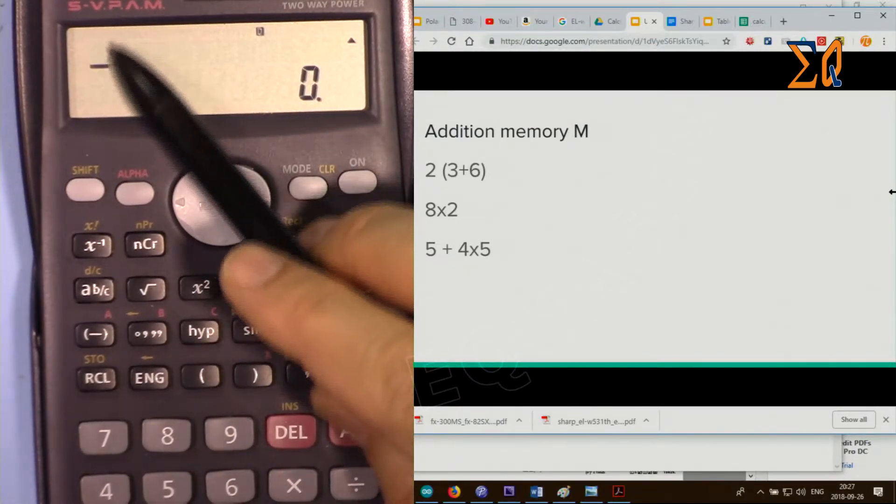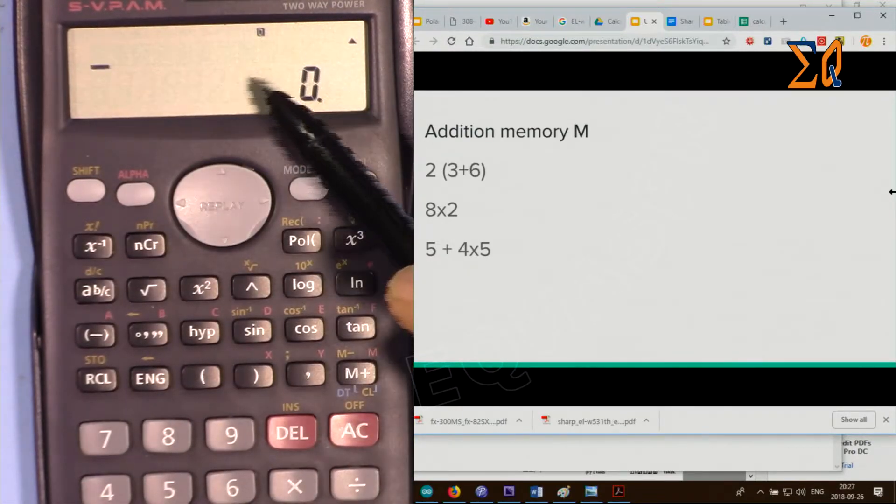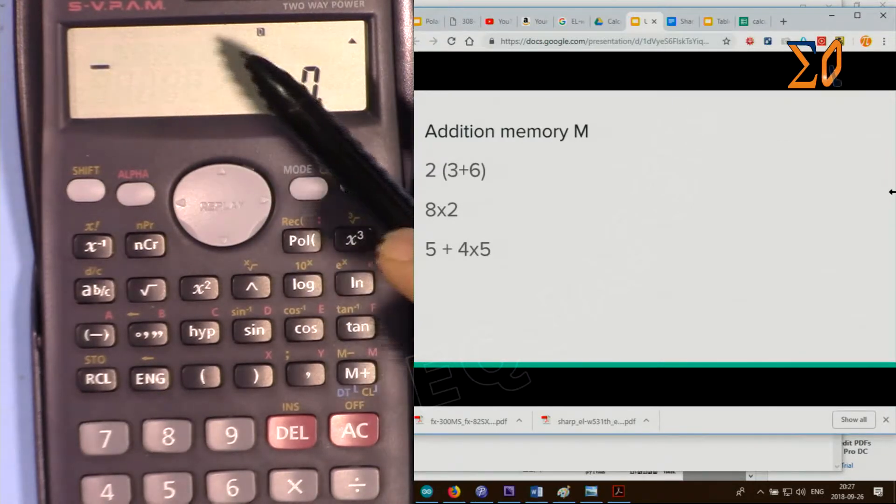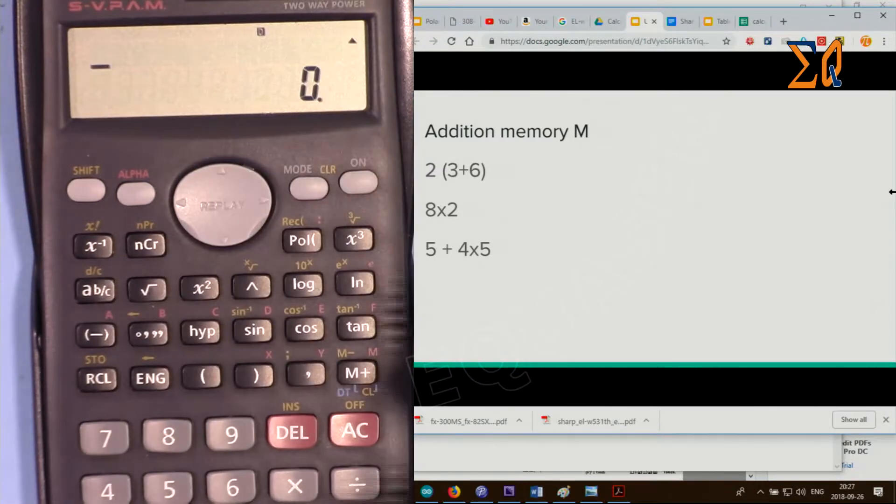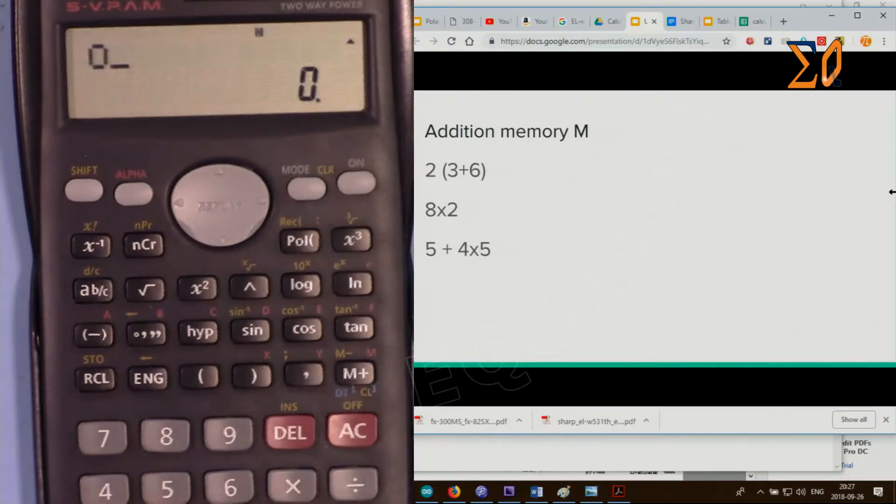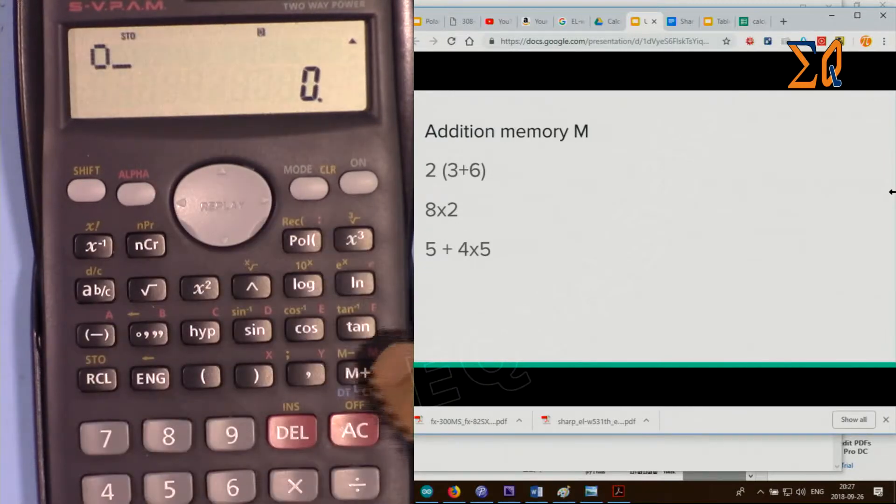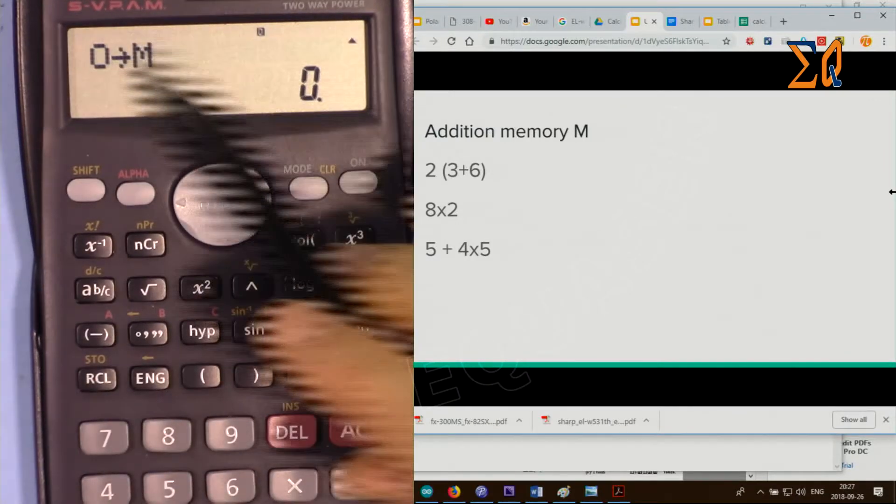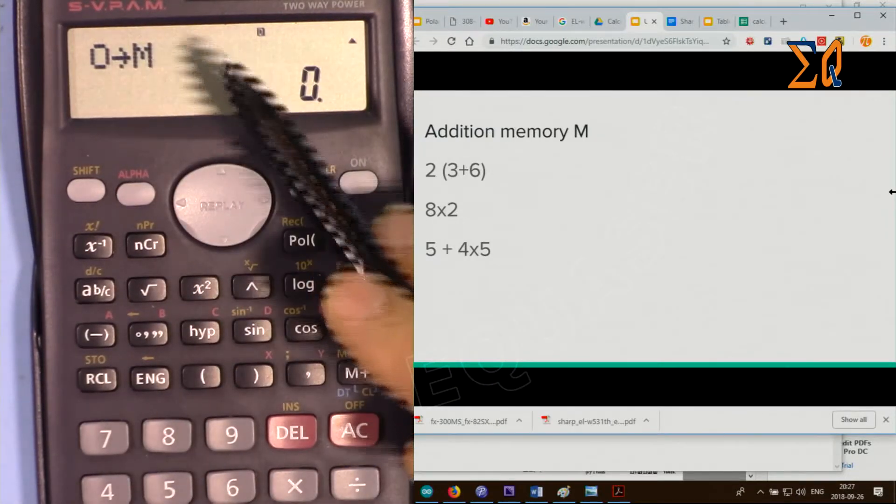If we have a value, you can store zero into the memory. This M is also available as part of ABCD and M. Let's put 0, second function store, and then this button. It puts 0 and clears the memory for us, making sure there is no value.